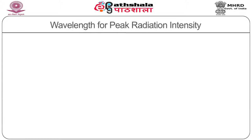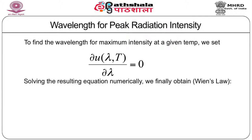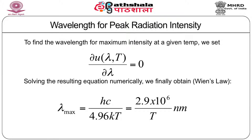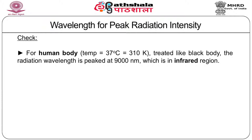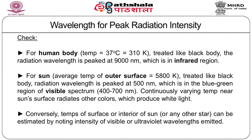To find the wavelength of peak radiation intensity for blackbody radiation, we differentiate Planck's formula and set it to zero, giving Wien's Law: λ_max = 2.9 × 10⁶ / T nanometers. For a human body at around 300 K, radiation peaks at 9,000 nm, which is in the infrared region. For the sun, emission peaks in the visible region at about 400–700 nm, which is why we get white light from the sun. Conversely, surface temperatures of stars can be estimated by noting the intensity of visible or ultraviolet wavelengths they emit.